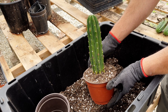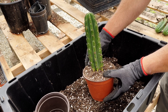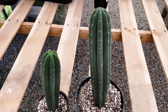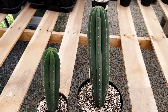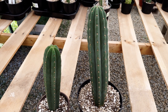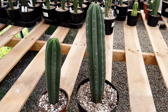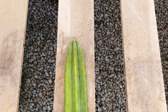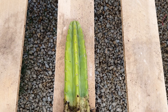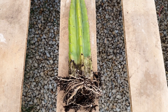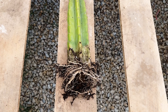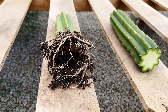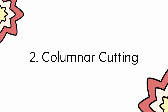Starting off our list is the columnar rooted San Pedro. These are the most common forms of San Pedro that you'll find. They have tall, erect columnar stems that grow straight up. Rooted San Pedro are cacti that have matured into full, robust plants with strong, healthy roots that are ready to be planted in soil.